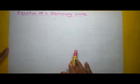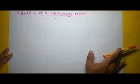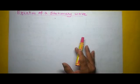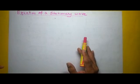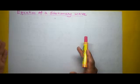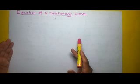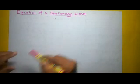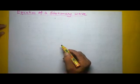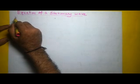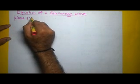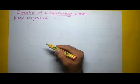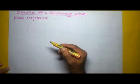In the previous video I introduced you to a stationary wave. We know that it is generated when we have a bounded medium and there is a reflection of waves. When the incident wave and the reflected wave superimpose, a stationary wave is produced. We have also talked about a plane progressive wave and how two plane progressive waves moving in opposite directions create a stationary wave.